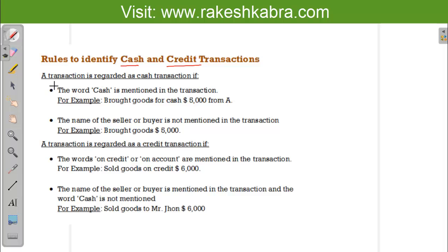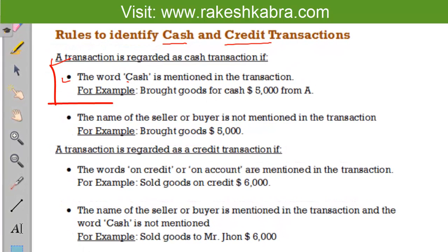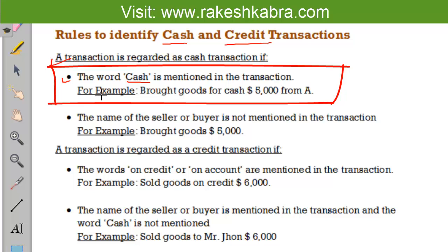A transaction is regarded as a cash transaction if the word 'cash' is mentioned in the transaction. To support this rule, here we have one example: 'Brought goods for cash $5,000 from A.' It means we purchased goods from A, and it is clearly mentioned that we brought goods for cash, so the word cash is given.